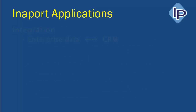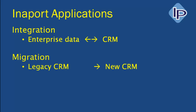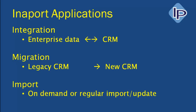Types of applications Interport is used for. Typically, integration — so bidirectional integration between enterprise data and your CRM system. Migration — so take a legacy CRM system and migrate it to a new CRM environment. And import — either on-demand or regularly scheduled import and update of your CRM system with data from external sources.